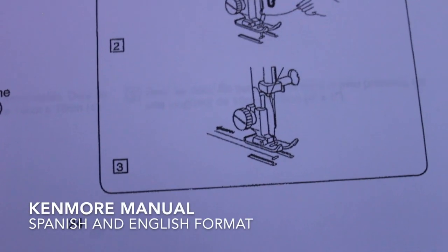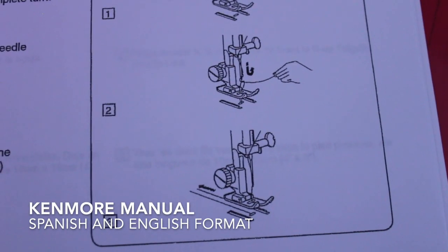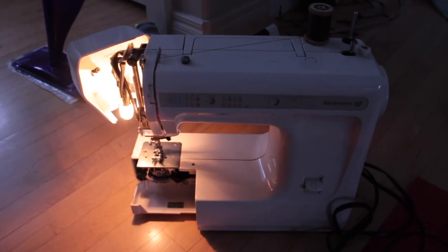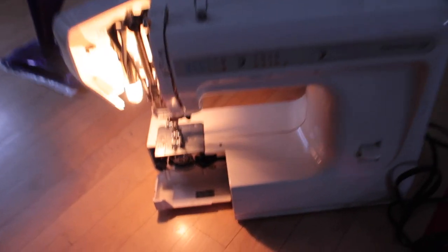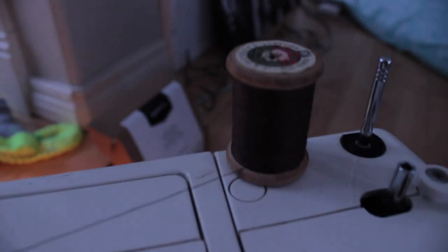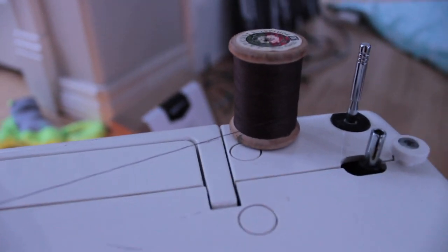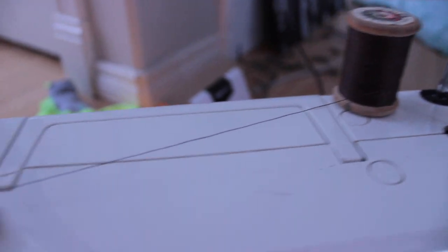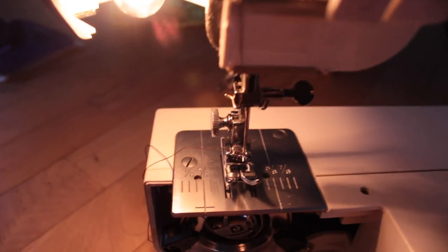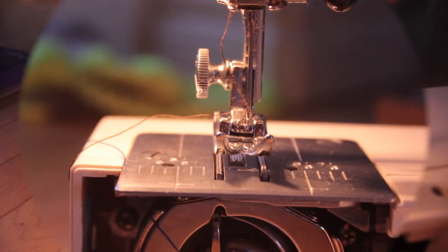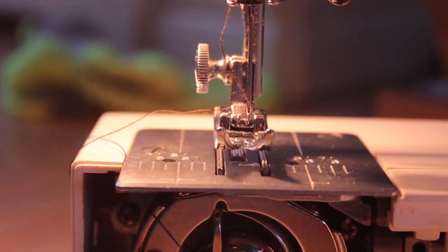This becomes the tricky part where we have to take our own initiative to bring the thread up from the bottom underneath the machine. Here I've loaded some hundred year old or so coat sewing thread. It's actually probably about fifty years old. I did get it at the same thrift store that the machine actually came from.